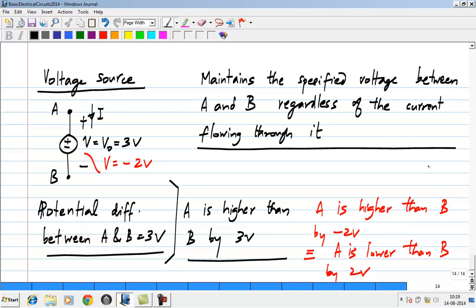And this voltage could also be dependent on time, though in most of this course we will be looking at voltages which are constant with time. It could very well be a voltage source which has a time dependent voltage, that is very much possible. All it means is that the voltage difference between A and B is that function of time.